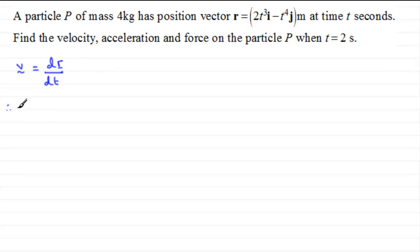So, using that, the velocity vector v is going to be equal to, well, if we differentiate the i component here, we're going to get 2 times 3 is 6, and then we reduce the power by 1, so we end up with 6t squared in the i direction.